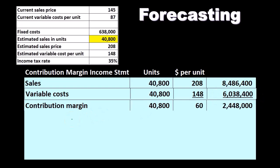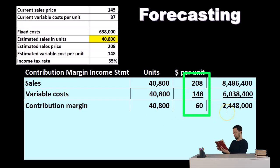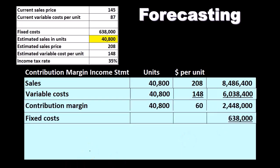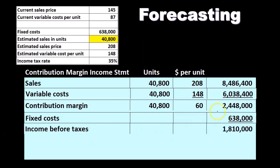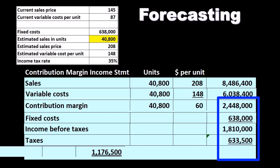Then we calculate the contribution margin. We can do this two ways: take 40,800 units times the contribution margin per unit of $60 ($208 minus $148), giving us $2,448,000. Or we take total sales minus variable costs to get the same $2,448,000 — a useful double-check. Next are the fixed costs — we don't multiply by 40,800 because fixed costs don't depend on units. The fixed cost is $638,000 as-is. That gives us income before taxes of $2,448,000 minus $638,000, or $1,810,000. Then we calculate tax of $633,500 and subtract to get net income.